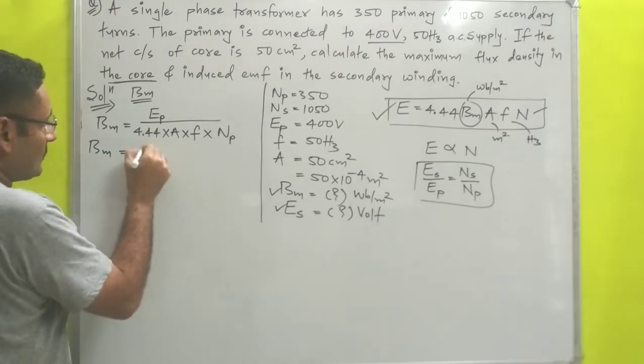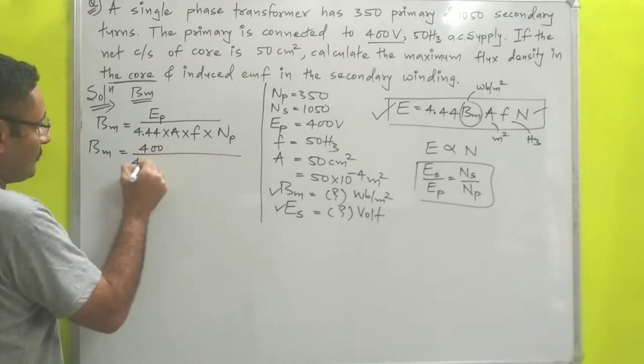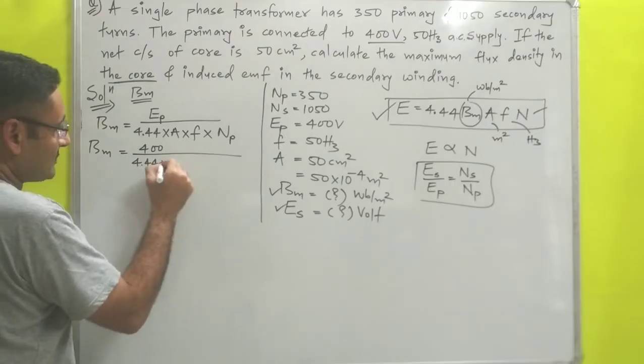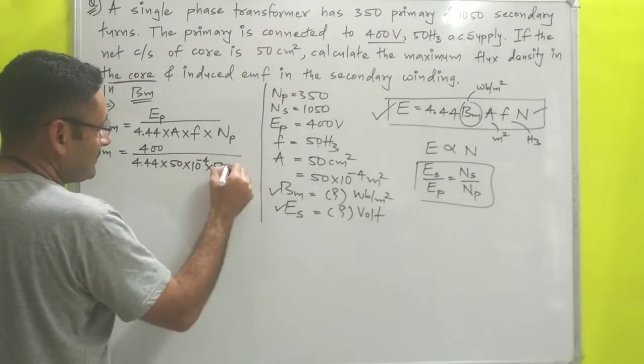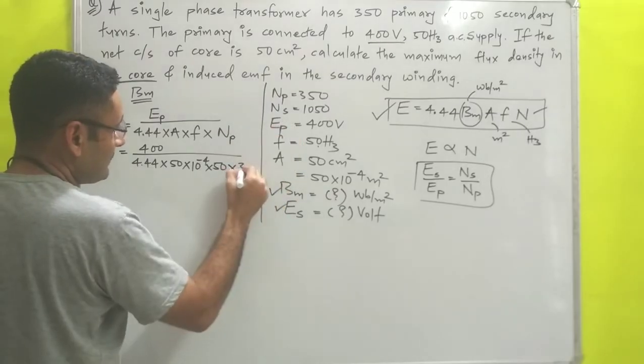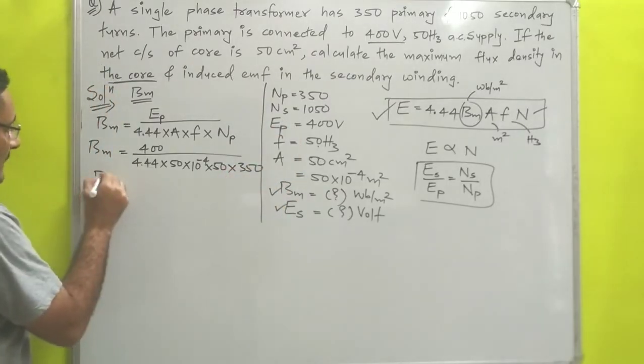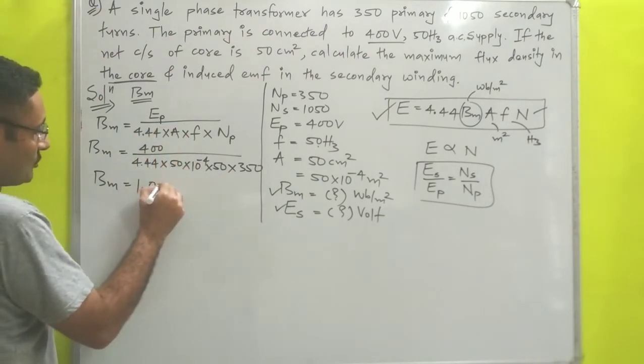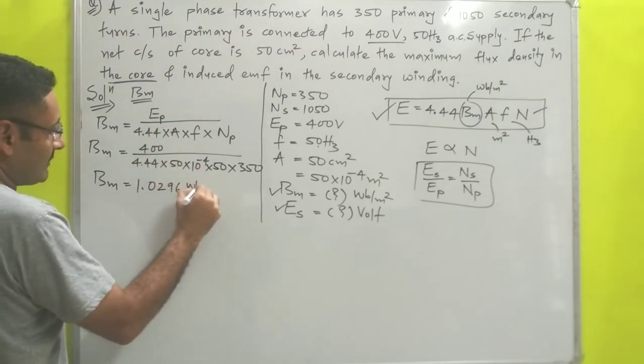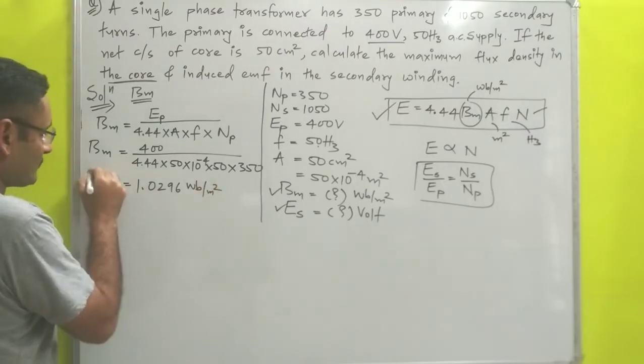So Bm = 400 / (4.44 × 50 × 10^-4 × 50 × 350). If we calculate the answer of this term, it will be around 1.0296 weber per meter square. So this is your answer number one.